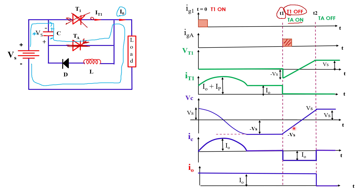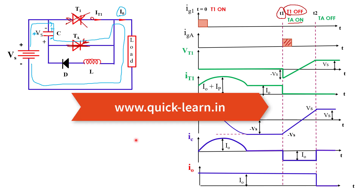One point to clarify: in mode 1 we get a sinusoidal waveform because inductor L and capacitor C are connected in series forming a series resonant circuit. But after time instant T1 in mode 2, only the capacitor is involved — no inductor — so we get a linear waveform. This is the whole working of the Class D commutation circuit. If you like the video, please like, subscribe, and share my channel. For notes, please visit my website: www.quick-learn.in.